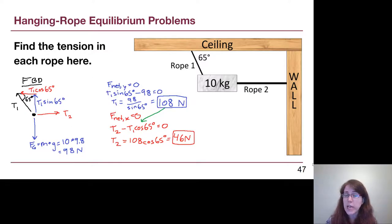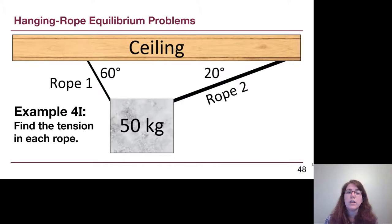In the y direction, we have enough information that we only have one unknown, so if we solve that first, then we can plug that unknown into the x equation, and we'll get 108 newtons for tension one, the rope that's at an angle, and we'll get 46 newtons for tension two, the rope that is sideways. This example with two different angles for the ropes is complicated enough that we're going to see the problem solving process in action, so it's example 4i, and we'll have its own separate example video.